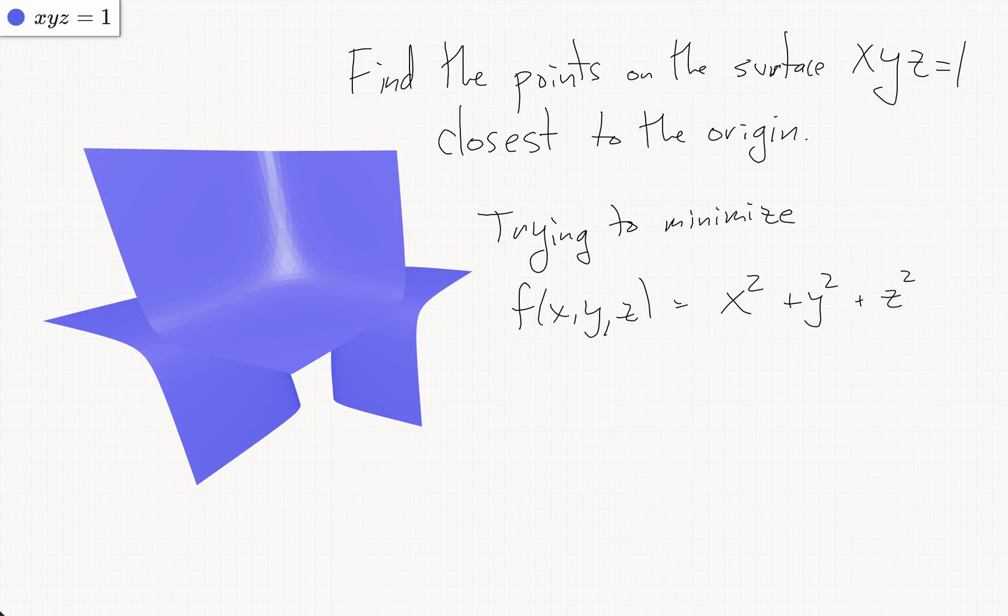This is the distance squared to the origin, subject to the constraint that g(x, y, z) equals xyz minus 1 equals 0.